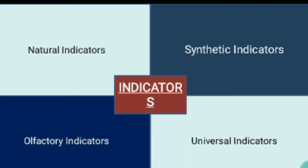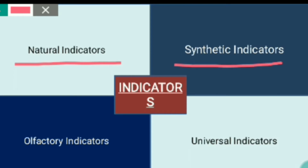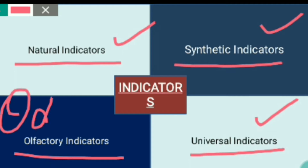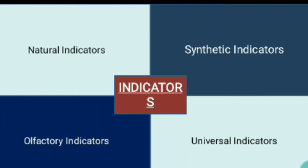Indicators are of four types. First, natural indicators — these are the indicators which we get from plants and animals. Second, synthetic indicators — these are prepared in laboratories. Third, universal indicator — it is the mixture of several indicators and tells us how strong the acid or base is. The fourth type is olfactory indicators. Natural, synthetic, and universal indicators show a change in color, while olfactory indicators show a change in their odor — meaning their smell changes — so we get to know if the substance is acid or base.